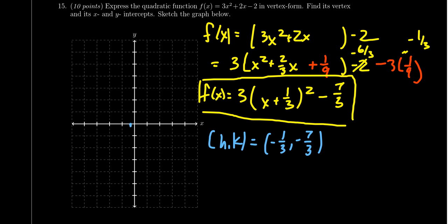Negative 7 thirds, that's 2 and a third, negative 2 and a third. So it's going to be about right here. So the vertex, I'm going to graph it. I would put it right here. And it's best to label this thing. So negative 1 third and then negative 7 thirds like so. Great. So we have the vertex there.